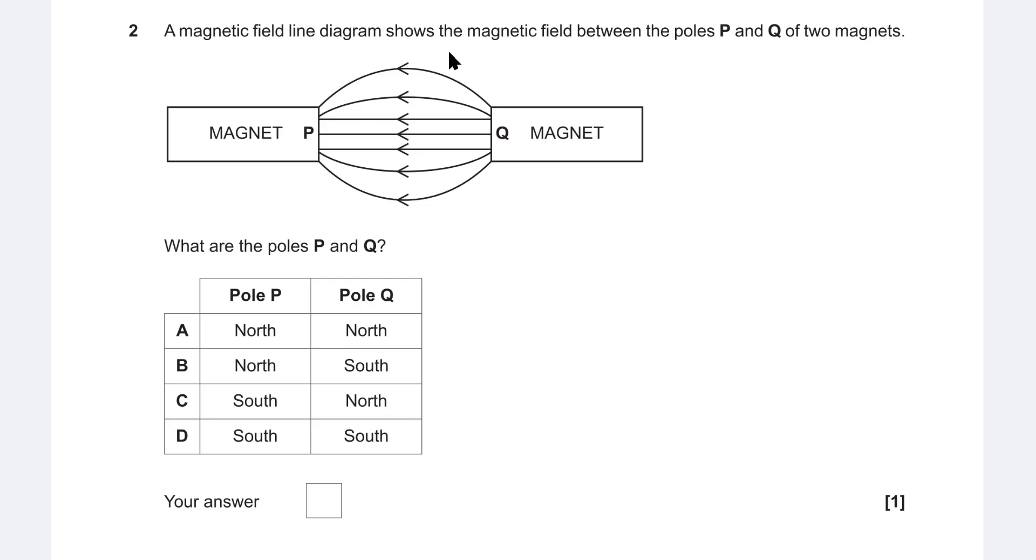We have a magnetic field diagram and what we need to do is see how to label the individual poles. What are the poles P and Q? Well, the field lines always go from north to south, so this means that Q will be north and P will be south. Correct answer is C.